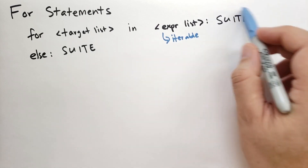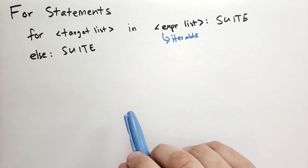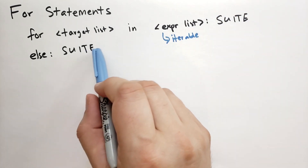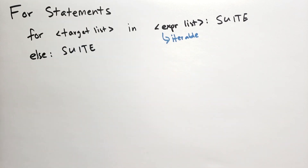It does this for each item until it runs out of items. When it's run out of items, it will execute the else block if there is any, and then continue with the statements following the for statement.